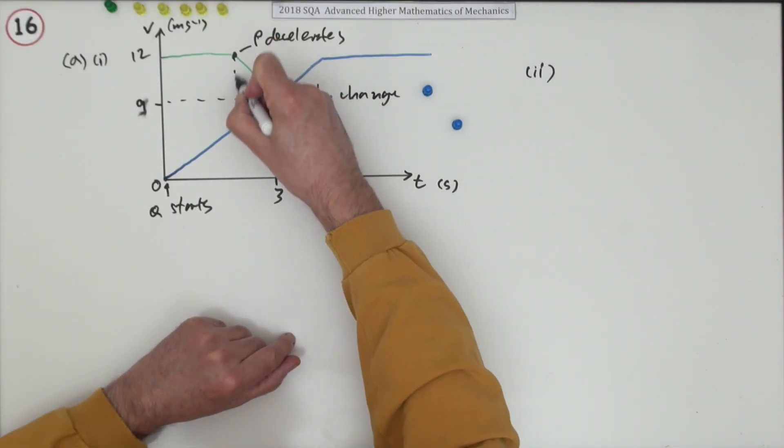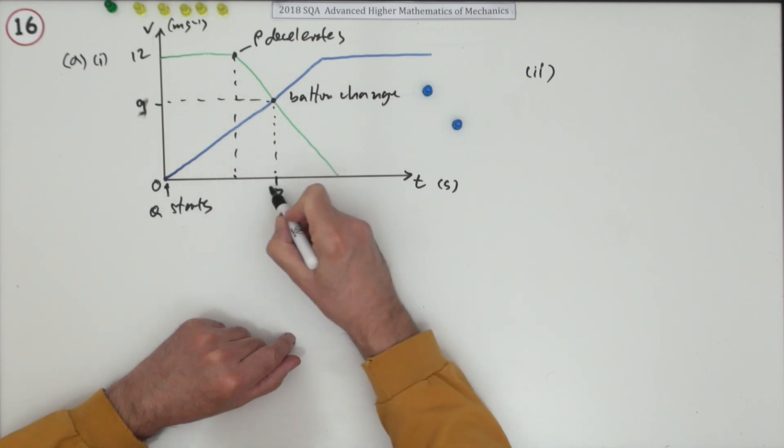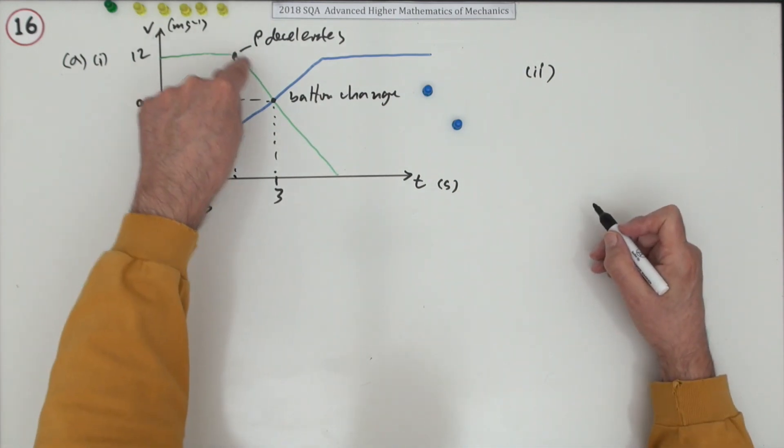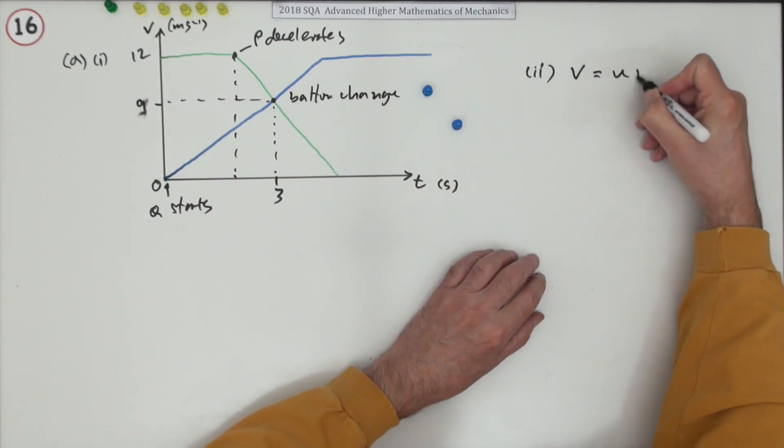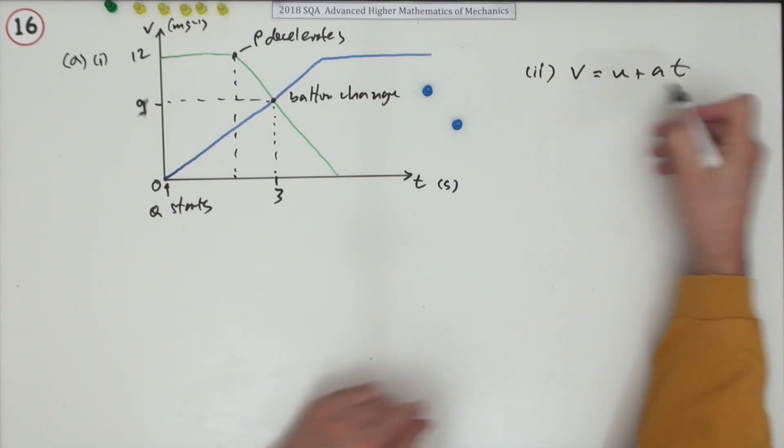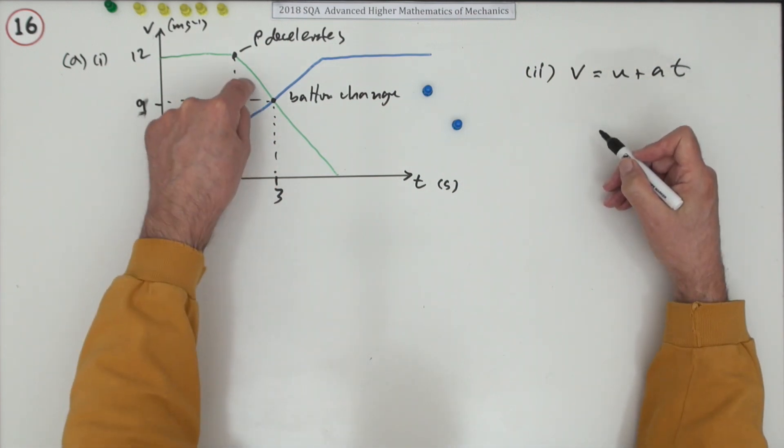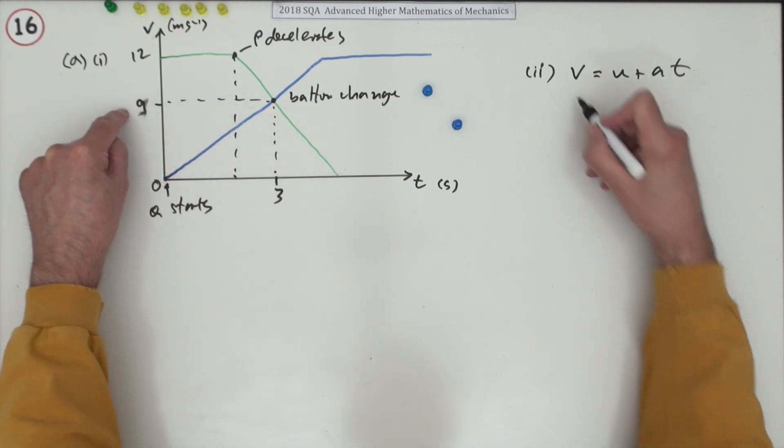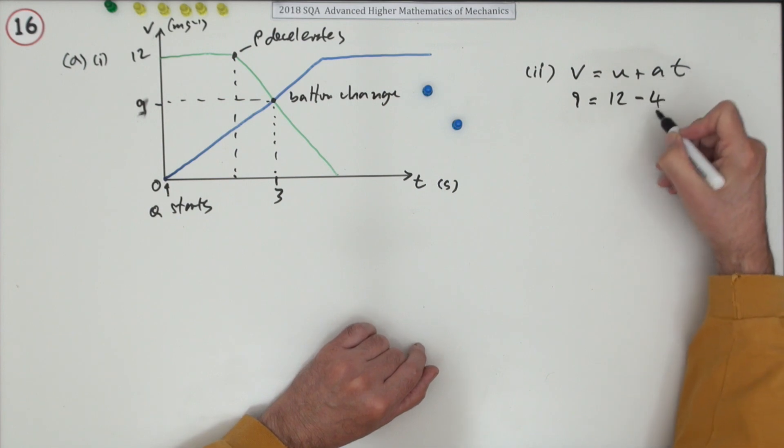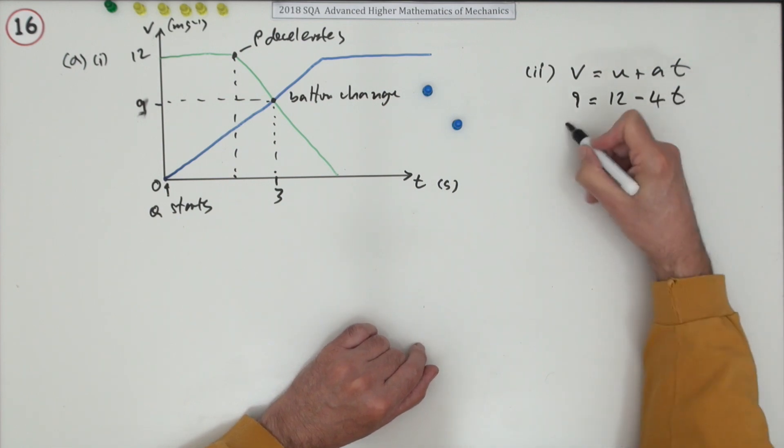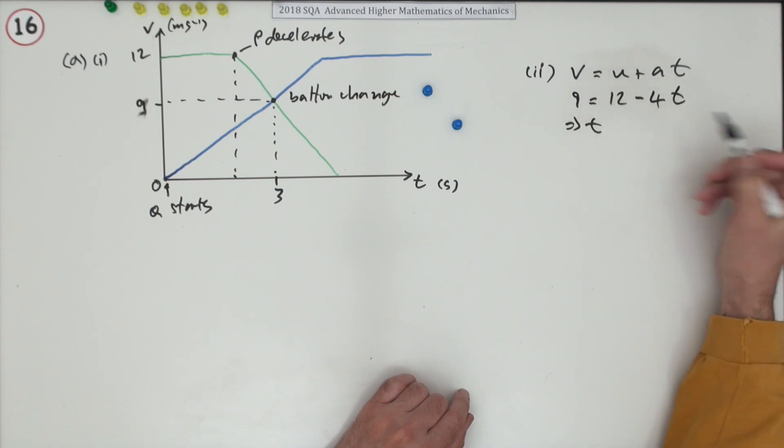How many seconds is P decelerated? What's this time interval in here? Well it's just a constant deceleration. So V equals U plus AT. Final velocity 9, initial velocity 12, deceleration minus 4T. Rearranging that, take the 12 across, negative 3, divide by negative 4. That's 3 quarters of a second, or 0.75 seconds.